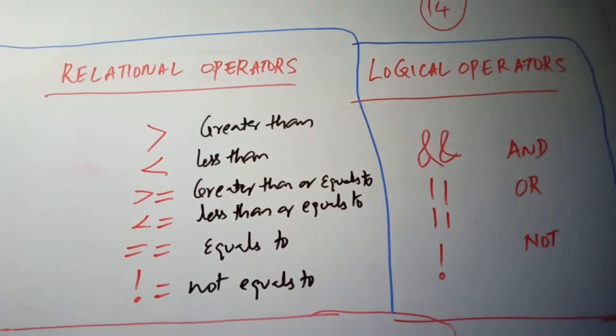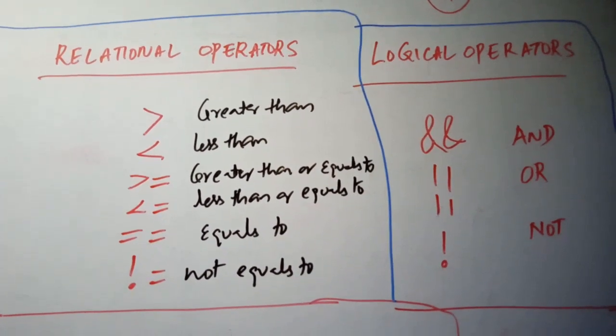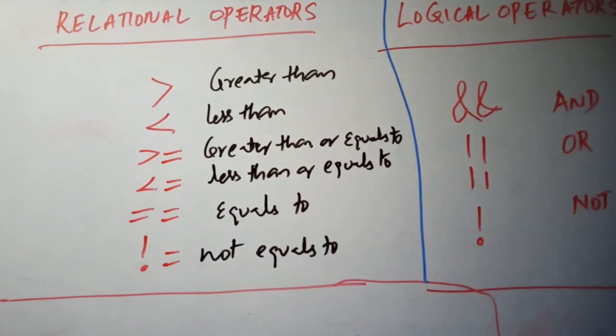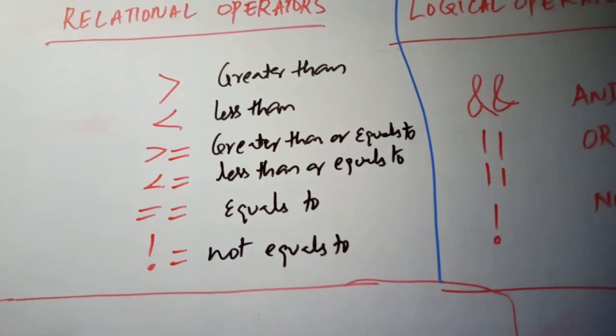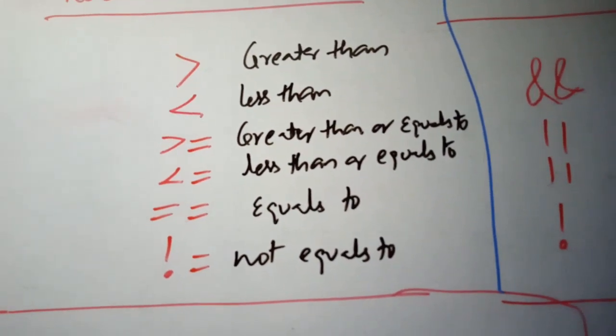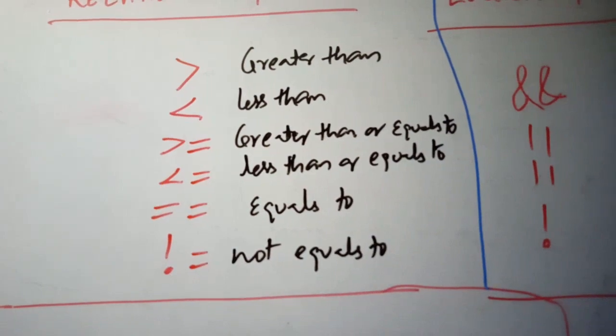Relational Operators, we use relational operators whenever you want to compare any two quantities. In general we use the term condition, any condition can be either true or false. Here we have greater than, less than, greater than or equal to, less than or equal to, equal to and not equal to.